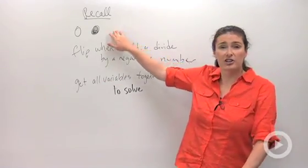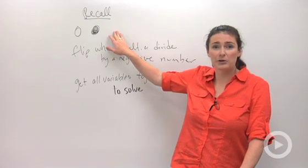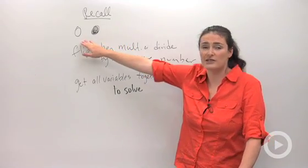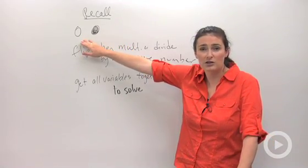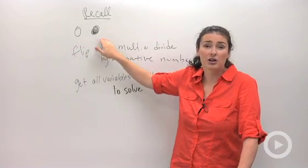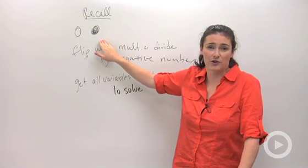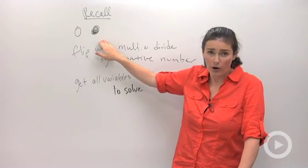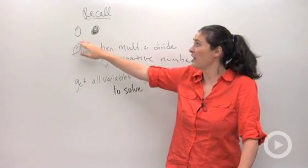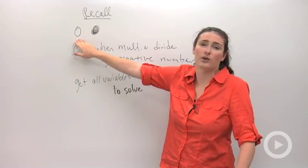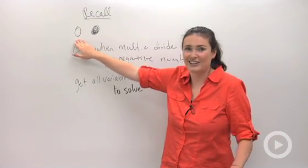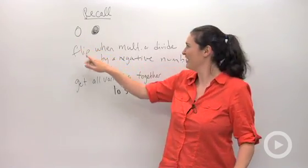First thing: when you're graphing on a number line, be really careful when you're using a closed circle versus an open circle. A closed circle is for greater than or equal to, or less than or equal to. An open circle is just for greater than or less than. It's kind of tricky.